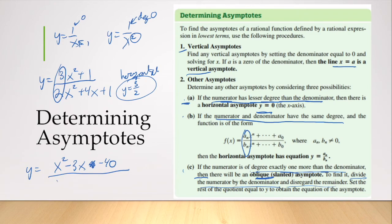over 3x plus 1, because my numerator is of degree 2 and my denominator is of degree 1, it's exactly one more than my denominator. It's going to have an oblique asymptote, and we'd find that by dividing. So let's work through some examples where we determine the asymptotes.